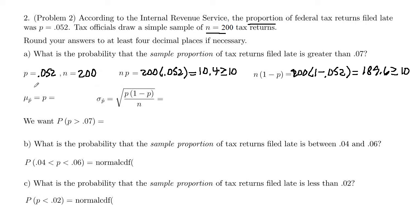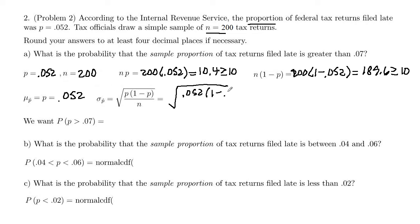Given that we're using the normal approximation, the mean of the sampling distribution of P-hat, mu of P-hat, is just P, which is 0.052. That'll be the mean in normal CDF. The standard deviation of the sampling distribution of P-hat is the square root of P times 1 minus P divided by N — so square root of 0.052 times 1 minus 0.052, divided by 200.